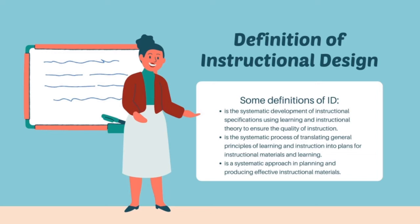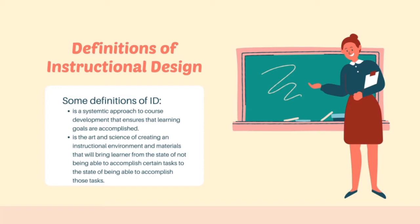Another definition is: instructional design is the systematic process of translating general principles of learning and instruction into plans for instructional materials and learning. Additionally, instructional design is a systematic approach to planning and producing effective instructional materials — similar to lesson planning, but more elaborate and more detailed. Another definition: instructional design is a systematic approach to course development that ensures learning goals are accomplished. It is an iterative — meaning repeating — process that requires ongoing evaluation and feedback.